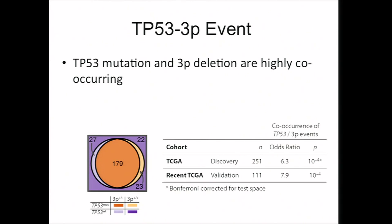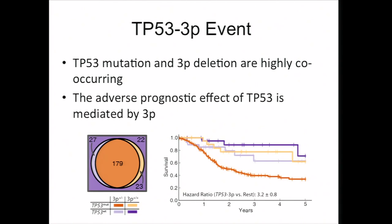We implicated each of these genes based on their association with prognosis. The next question was whether the prognostic effect is additive between the two events, or whether we see some sort of interaction. Indeed, while there is a small effect of each individually, the majority of the prognostic effect is mediated by patients that have both events together, such that P53 mutant patients that don't have the deletion actually have pretty decent outcomes.